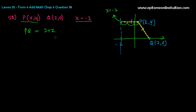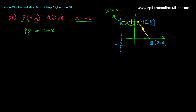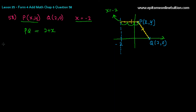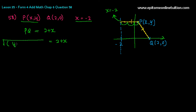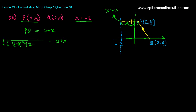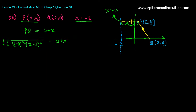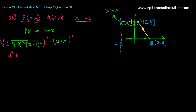The moment you pass this hurdle, you can continue using the distance formula. PQ equals 2 plus x. So PQ, using the distance formula, is the square root of (y minus 0) squared plus (x minus 2) squared. Squaring both sides, you get y squared plus x squared minus 4x plus 4 equals 4 plus 4x plus x squared.